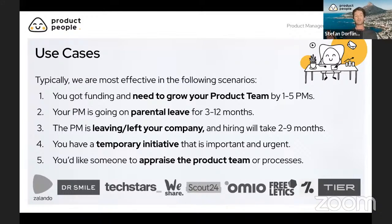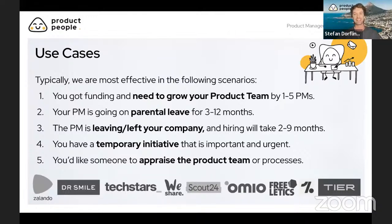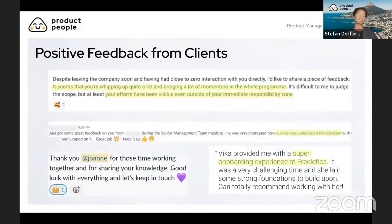Product People has worked with really cool clients including Zalando, Dr. Smile, Techstars, WeShare, Scout, Omio, Freeletics, and Tier. The team is quite diverse and well distributed across the world — a lot of countries in Europe and some members in Africa. They are legally based in Berlin, Germany. There's currently a spot open on the team, so if you want to join, they're hiring product managers at all levels as well as a senior business development manager to help grow their client base.